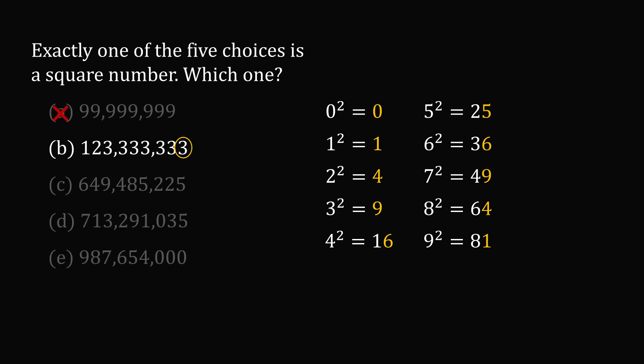We can take a look at the very last digit of each of these, and we see that none of them end in a 3. If you are a perfect square, you cannot have the last digit be equal to 3. So we know that option B is also not a perfect square.